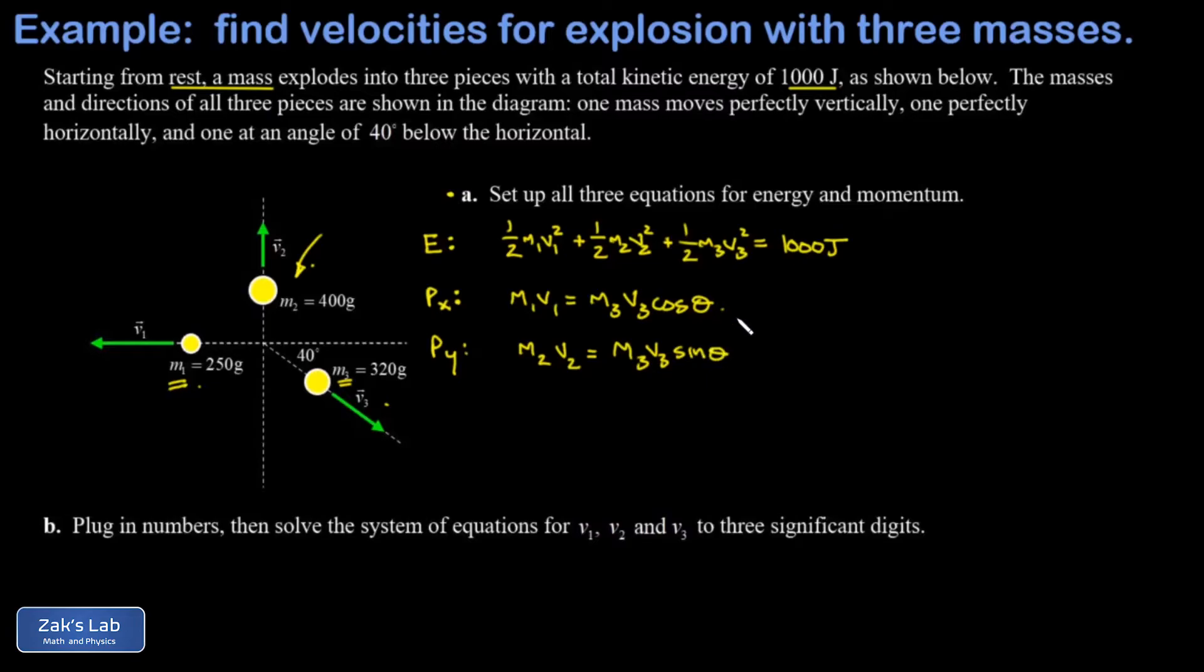So that's our three equations. Then we want to get some numbers in here and start to work on solving the system. What I'll do with the energy equation is multiply both sides by 2. That's going to give me 2,000 joules on the right-hand side and get rid of all those annoying one-halves. Then I have m1 v1 squared - we're going to go ahead and start putting in numbers. That's 0.250 kilograms times v1 squared, plus m2 v2 squared - that's 0.4 kilograms v2 squared, plus m3 v3 squared - that's 0.320 v3 squared. All of this adds up to 2,000 joules.